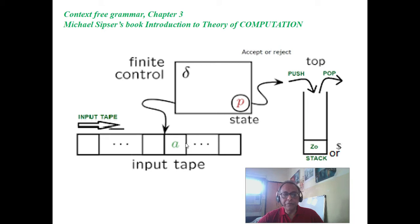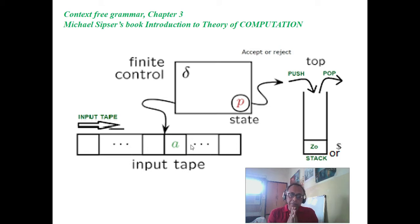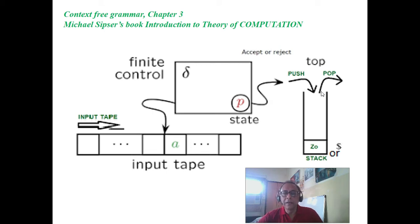FSM only moves left to right and can go only to an accepting state. That is the reason we can recognize languages like a^n b or a b^n or a^m b^n with no relation between m and n - that can be done without a stack. But a stack is needed whenever we want a^n b^n, or in Sipser's book 0^n 1^n, or balanced parentheses. We need a stack here.